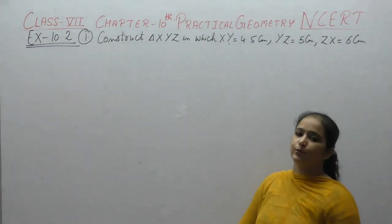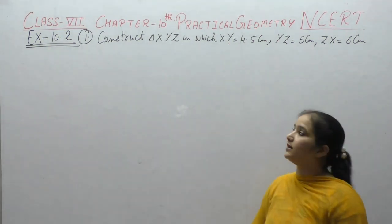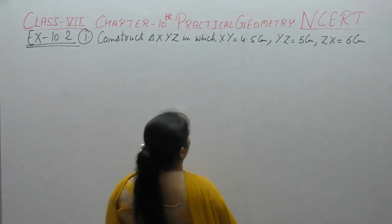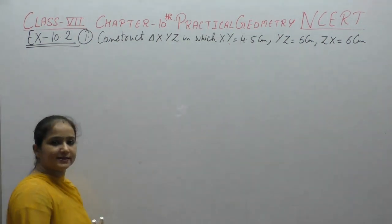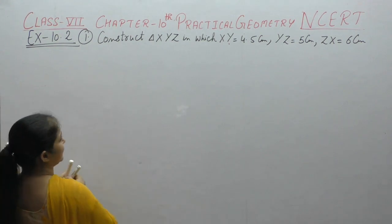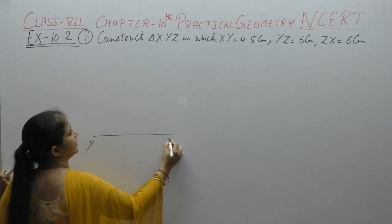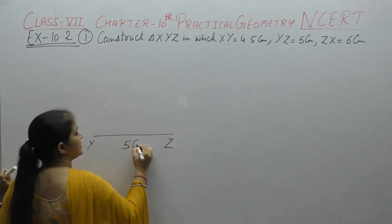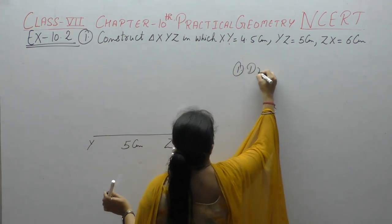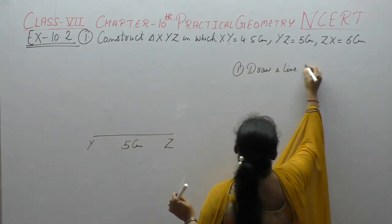Question 10.2: Construct triangle XYZ in which XY is 4.5 cm, YZ is 5 cm, and ZX is 6 cm. First, draw a line segment YZ equals to 5 cm.